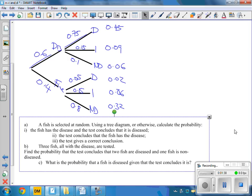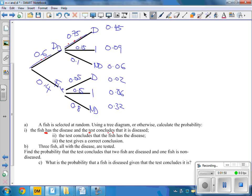Fish is selected at random. Find the probability that the fish has the disease. It has the disease and it says it's diseased. So has the disease and it says it's diseased is going to be 0.45.